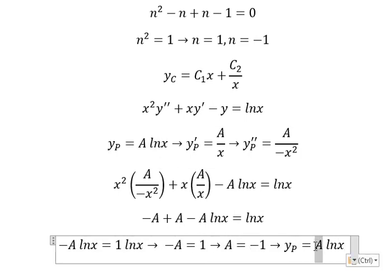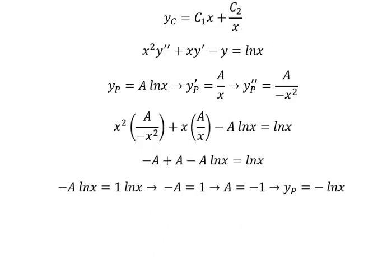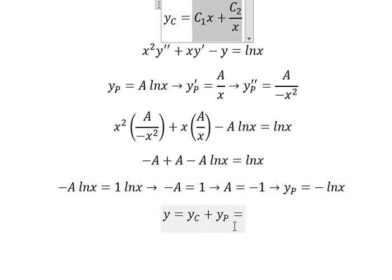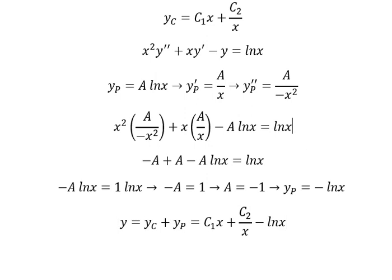We put the negative sign in, and now we have the final answer. The general solution y equals yc plus yp, which equals c1*x plus c2*(1/x) minus ln(x). This is the final answer. That is the end — thank you for watching.